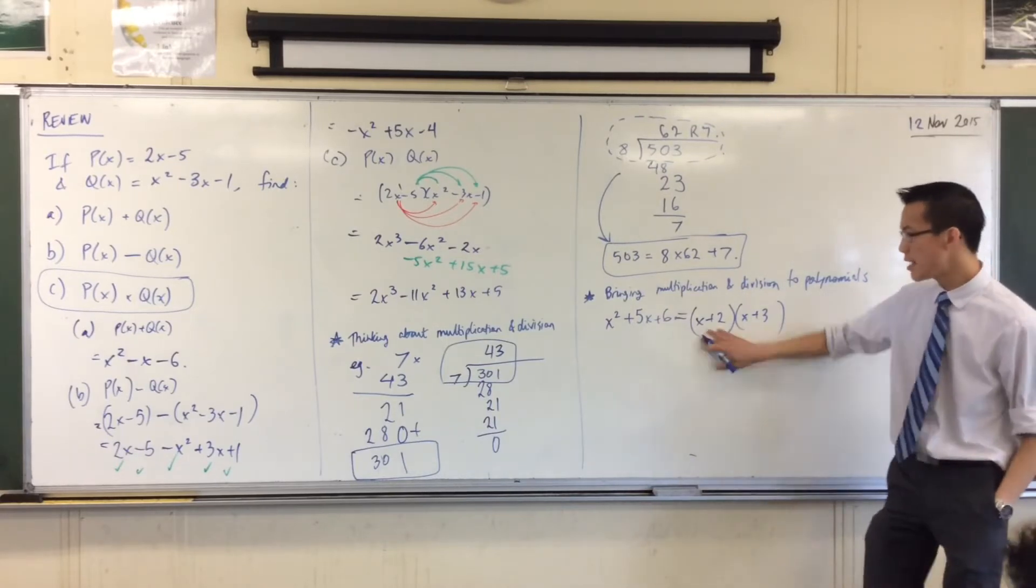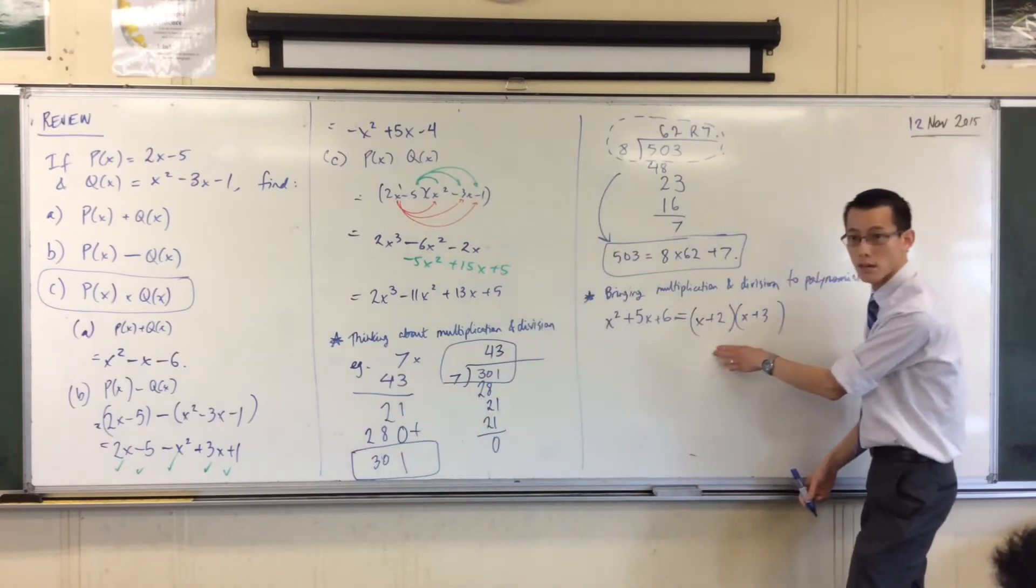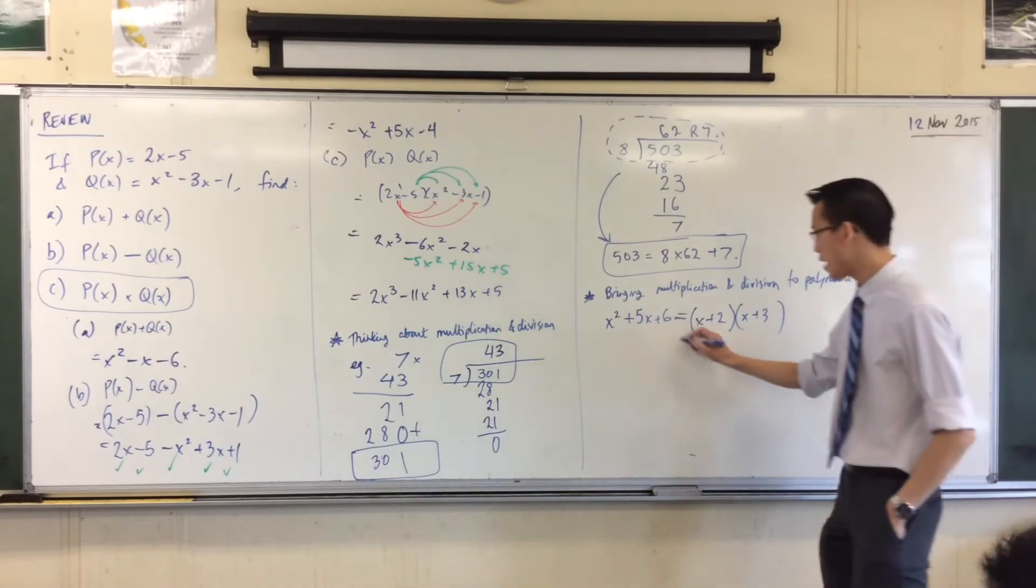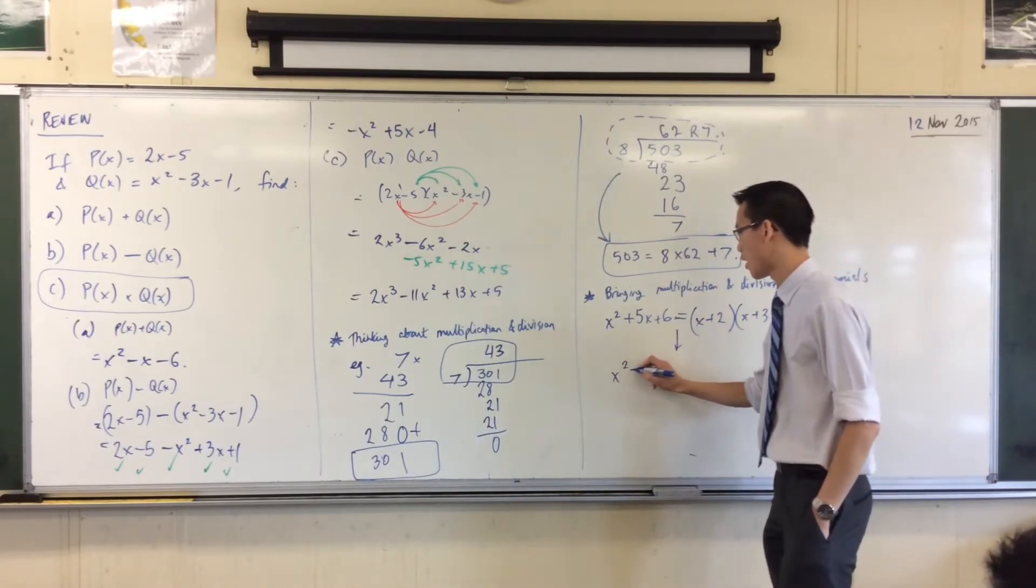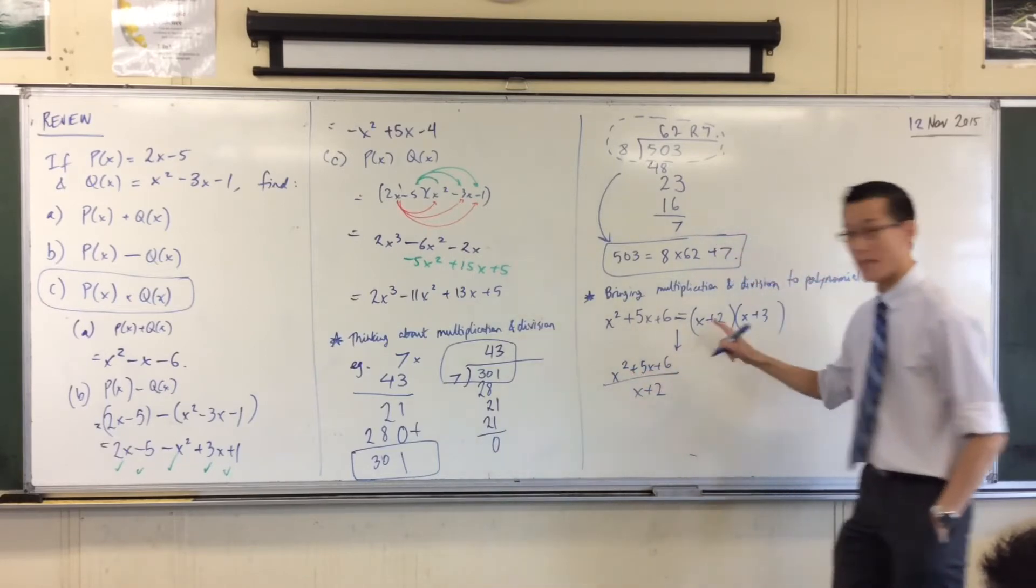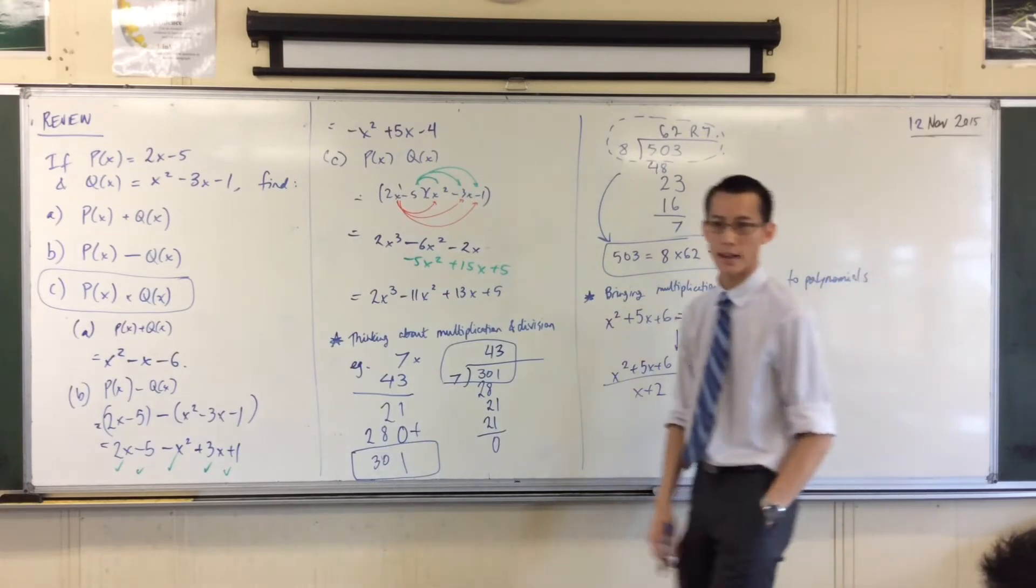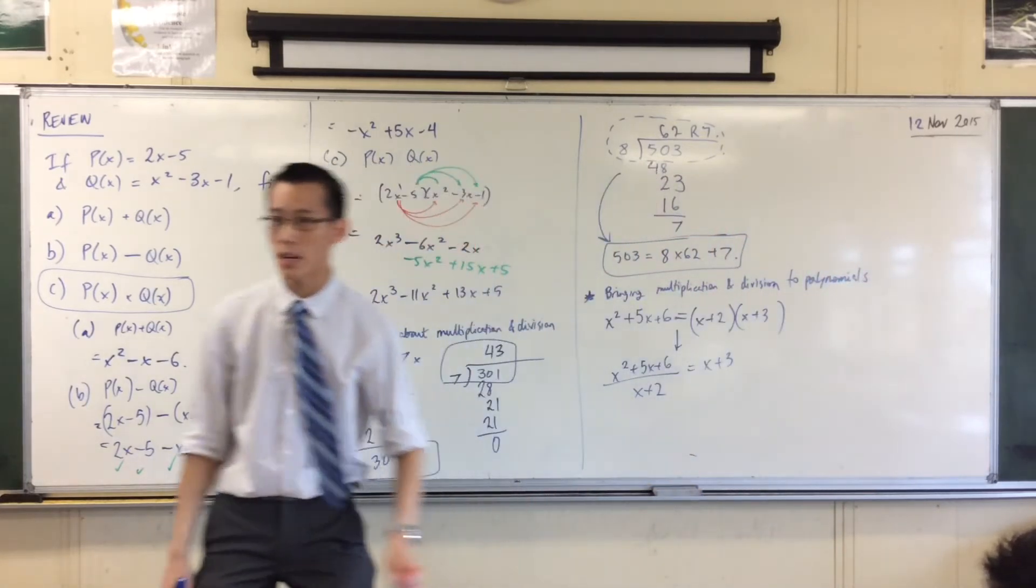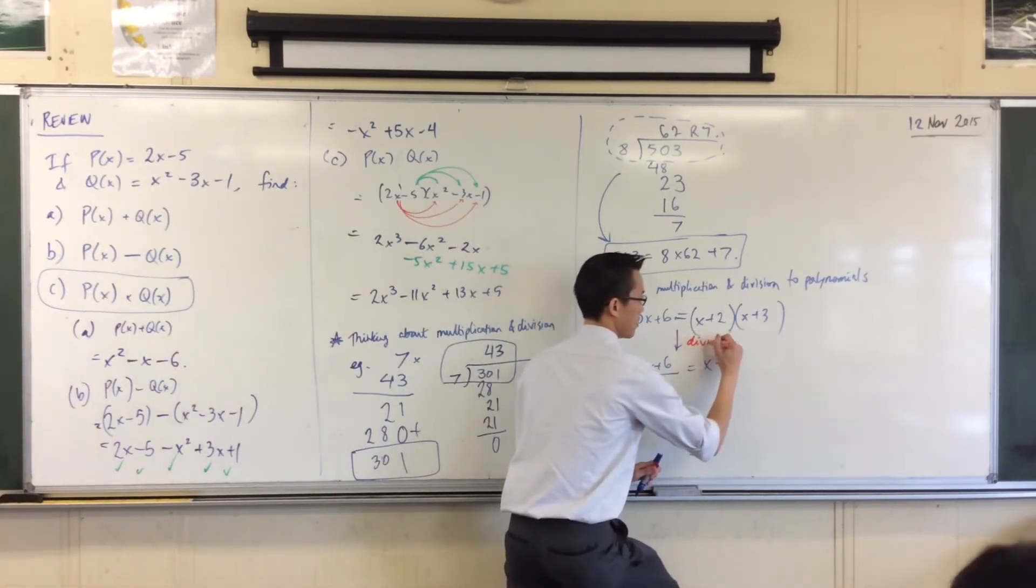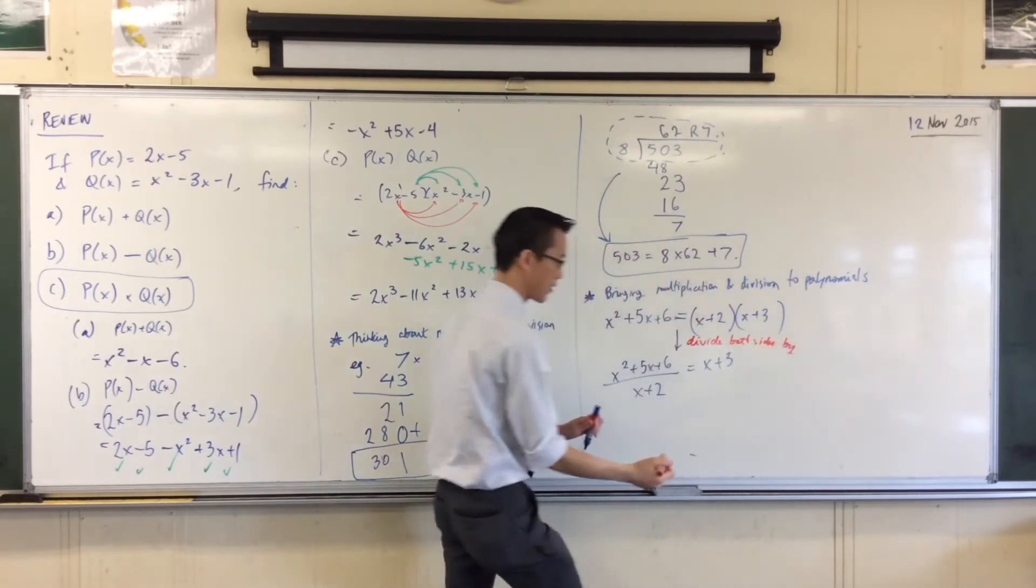And what this corresponds to is saying I can multiply these two together and get this. Therefore, it stands to reason that I should be able to divide this guy by that. And if I divide both sides by x plus 2, I just get left with x plus 3 on the right-hand side. Are you comfortable with that idea? All I've done is divide both sides by x plus 2.